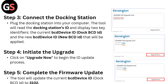Step 3: Connect the Docking Station — plug the Docking Station into your computer. The tool will read the Docking Station's ID and display the current BCD device ID, block BCD ID, and the new BCD device ID that will be applied. Step 4: Initiate the upgrade — click Upgrade Now to begin the ID update process.